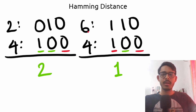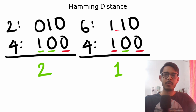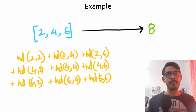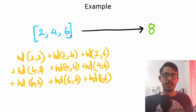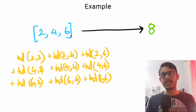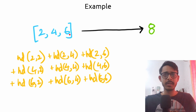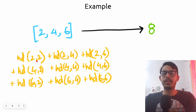Similarly, the hamming distance between 6 and 4 is 1, because there is 1 total disagreement between their bits. Now, for the test case [2, 4, 6], the problem asks us to return the sum of pairwise hamming distances. There are n² pairs. I've enumerated them: 2 with 2, 2 with 4, 2 with 6, and so on. Combining all of that gives the answer of 8.